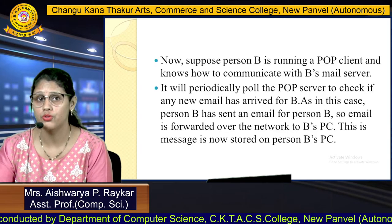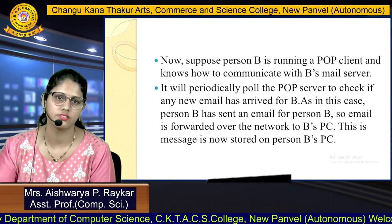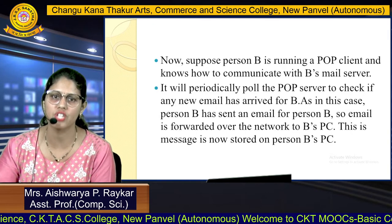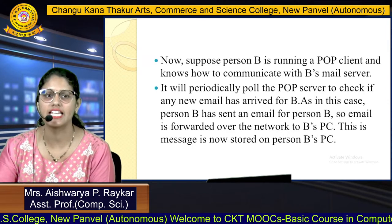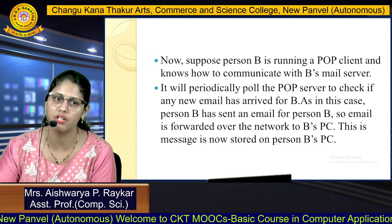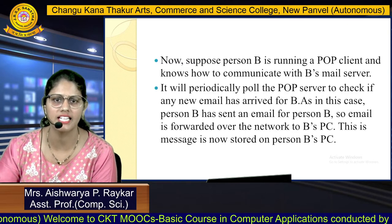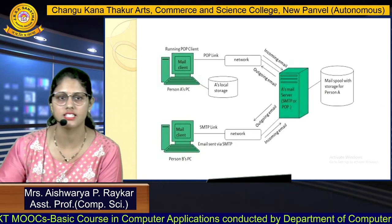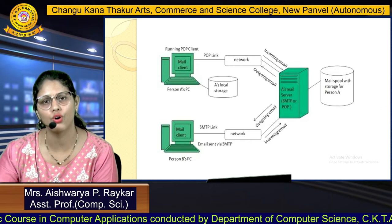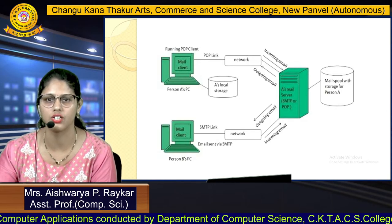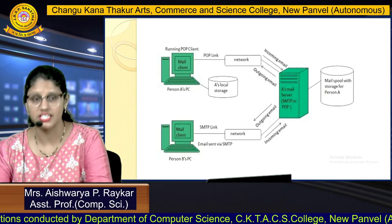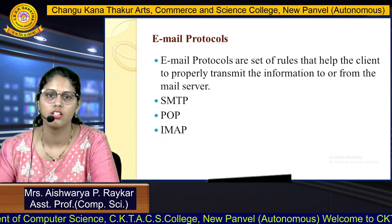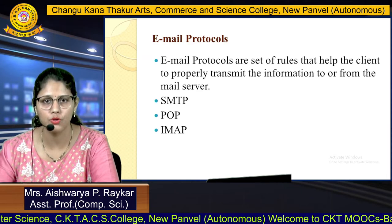Suppose person B is running a POP client that knows how to communicate with B's mail server. It will periodically poll the POP server to check if any new email has arrived for B. Since person A has sent an email for person B, the email is forwarded over the network to B's PC and is now stored on person B's computer. This is the diagrammatic view of the steps, showing person A's PC and person B's PC.